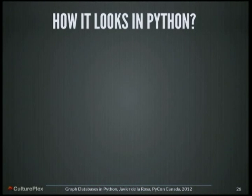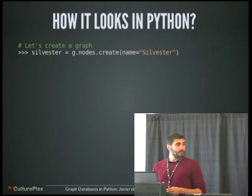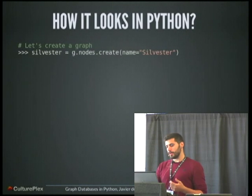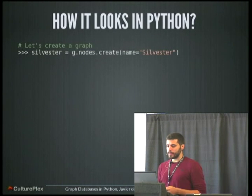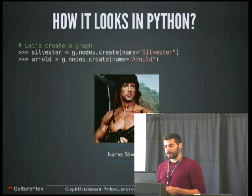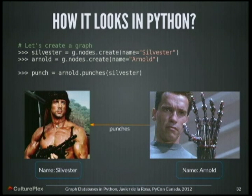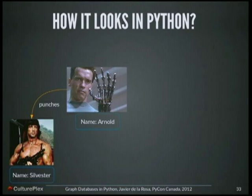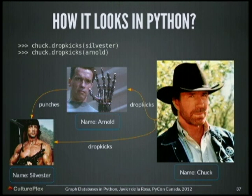So here's how a graph database looks in Python. I'm going to use the Neo4j REST client, a library I'm developing right now. Once you have instantiated the graph database object — we use g — you have a nodes attribute, and then you can create a node using a dictionary of properties. So we can create a node called Sylvester. We can also add a new node called Arnold. And then you can create a relationship — like Arnold punches Sylvester — and that's creating a relationship. You can add even more nodes, like Chuck, and then add new relationships, like DropKicks. So this is pretty much everything about graph databases on a really basic level.